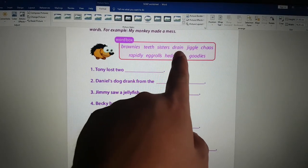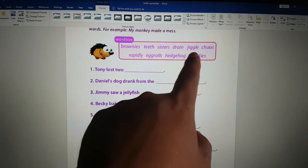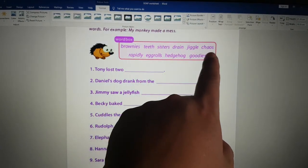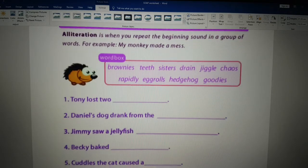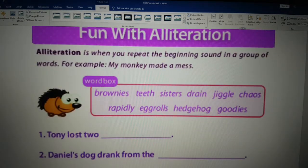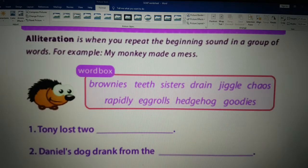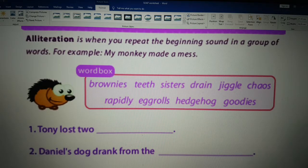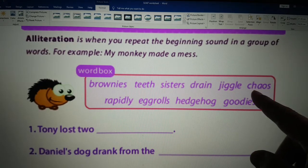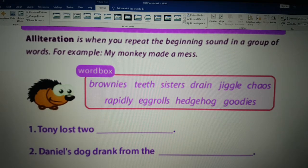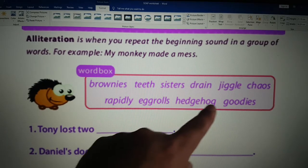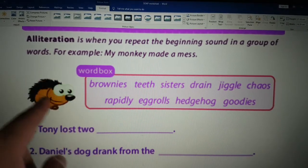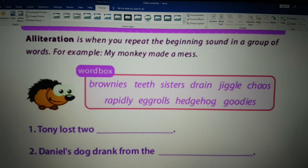Drain is where the water goes down. Jiggle. This word here, C-H-A-O-S, is chaos. Chaos is a big mess. It's not chaos, it's chaos. Rapidly means very quickly. Egg rolls, hedgehog. This is a hedgehog here, this animal. You don't get it in Hong Kong, but they're very cute. Hedgehog and goodies.